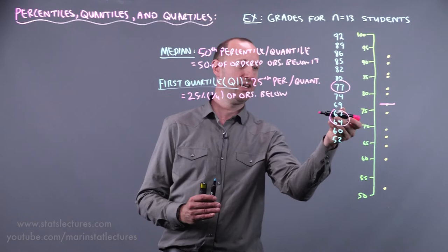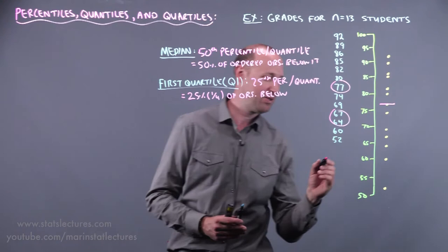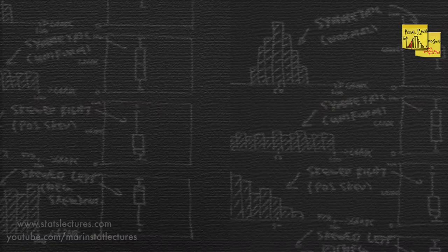And we'll not get stuck on the details of is it 67 or 64 or what value exactly in between. But it's falling roughly around here. Let's label this. This is Q1. This is the median.